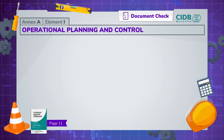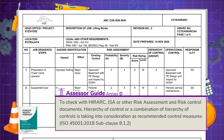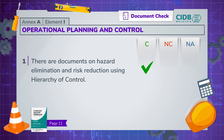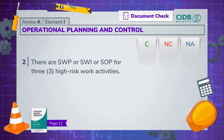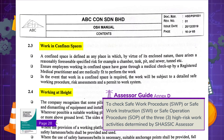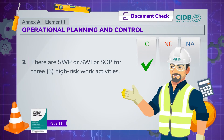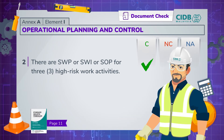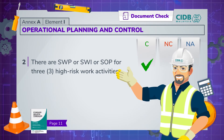Element I focuses on operational planning and control. There should be documents on hazard elimination and risk reduction using hierarchy of control. The JSA or other risk assessment and risk control documents should contain control measures governed by a hierarchy of control or a combination of such controls. Additionally, there should be a Safe Work Procedure, Safe Work Instruction or Safe Operation Procedure for three high-risk work activities determined by the SHASIC Assessor. The contractor has to produce the SWP, SWI or SOP for each of the high-risk activities to earn a tick for compliance.